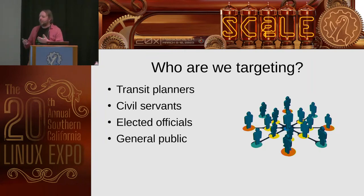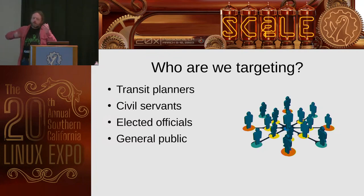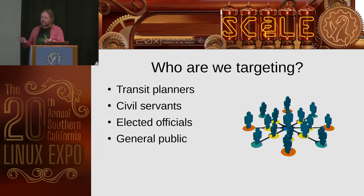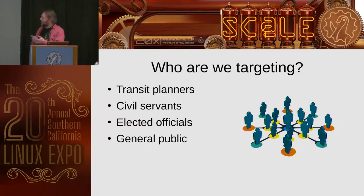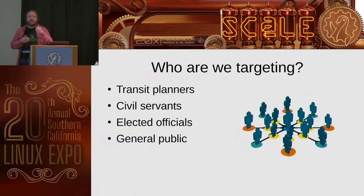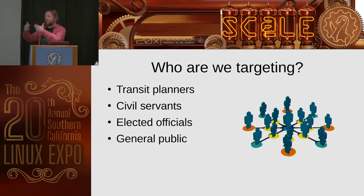The third target is elected officials themselves — they should be able to go and use the tool directly, not just get a report from transit planners and take decisions based on that. We often see a clash: a city asks us how to improve transit, we tell them, and they second-guess the suggestions. If they can draw bus lines themselves and see the impact of adding or removing a bus on general mobility, we hope the message gets across better.